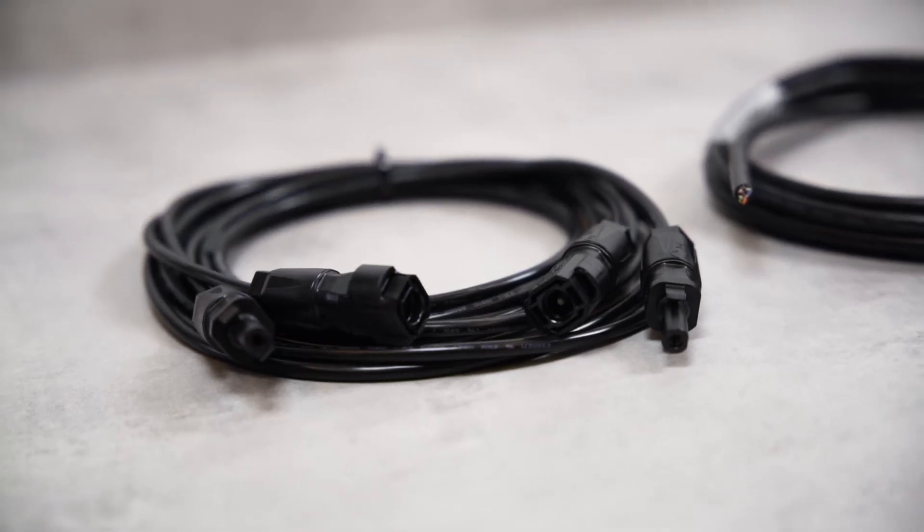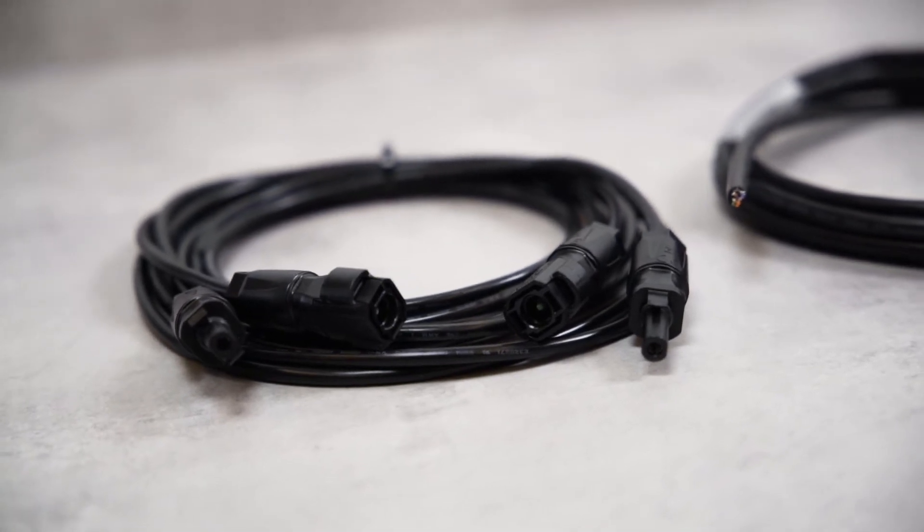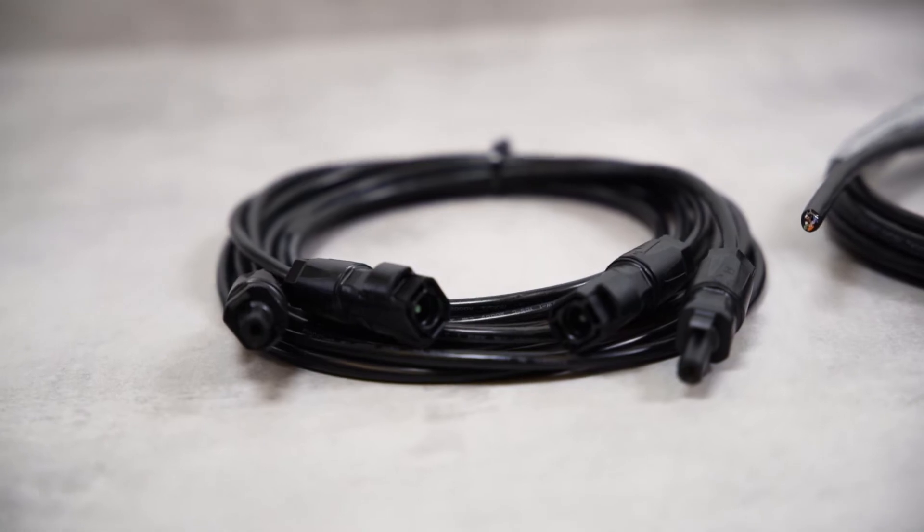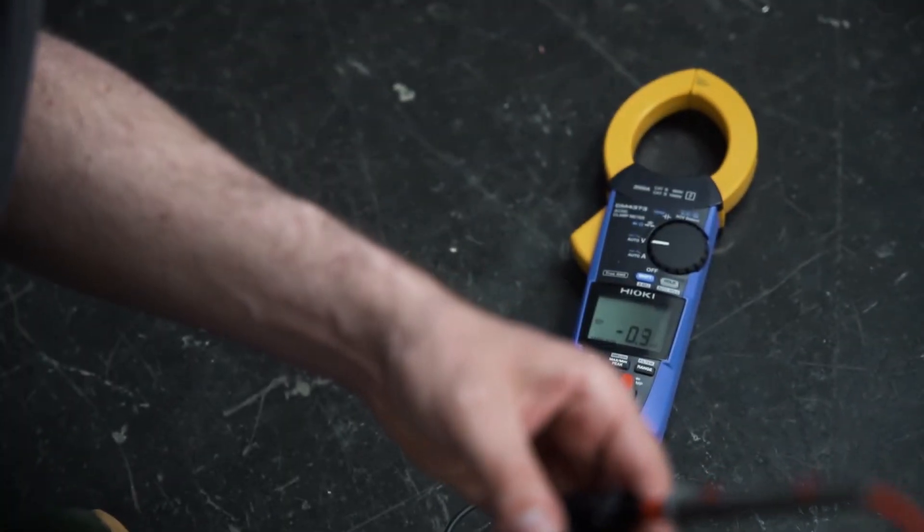Before the inverter can be connected, the AC home circuit breaker must be disconnected, the cables must be de-energized and in perfect condition. Before installation, make sure by measuring that the cables are really voltage-free. You will find all cable requirements and wire sizes in our manual.